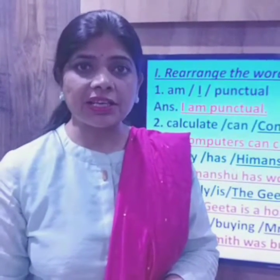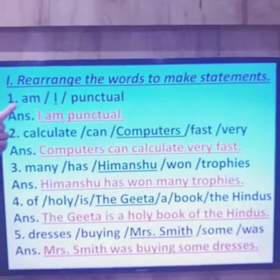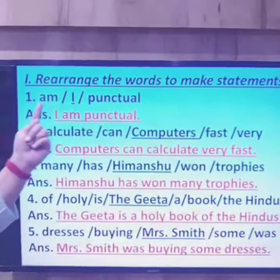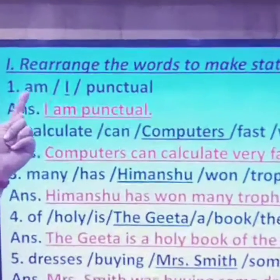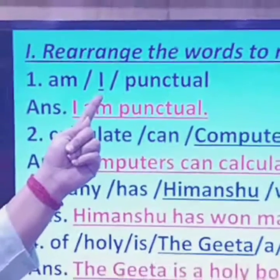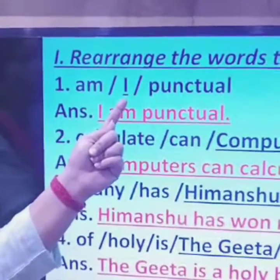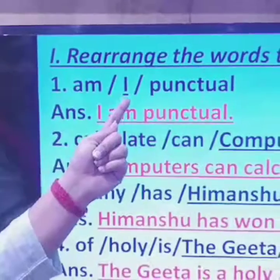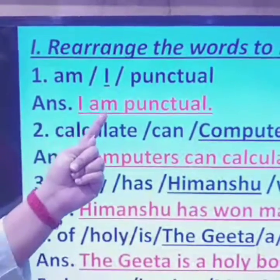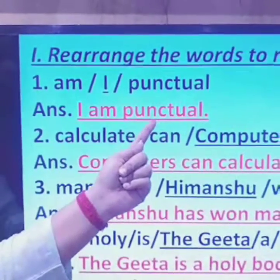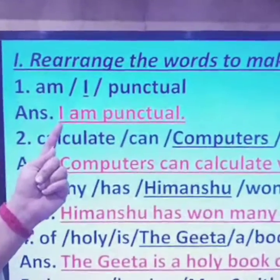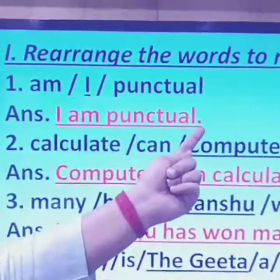Let's see the first example: 'am I punctual.' Here, we have to find the subject. The subject is 'I', which is already underlined, so we start with 'I'. Subject 'I' is followed by helping verb 'am', then 'punctual'. The correct sentence will be: 'I am punctual.' We start with a capital letter and end with a full stop.